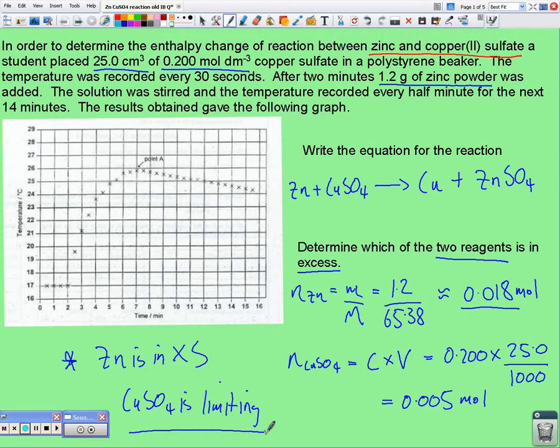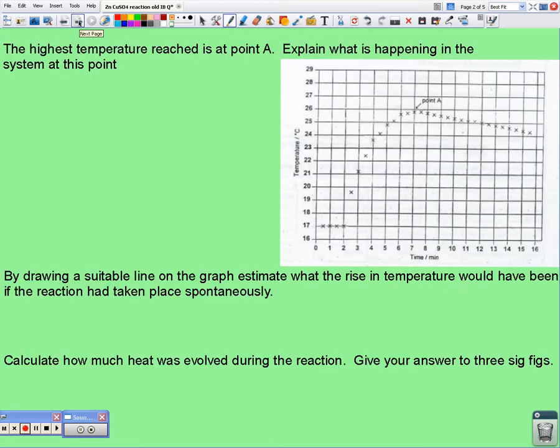Moving on, here's the rest of the question. It tells us that the highest point in the graph is at A here, highest temperature, is that point there, and they want us to know what's happening in the system at that point.